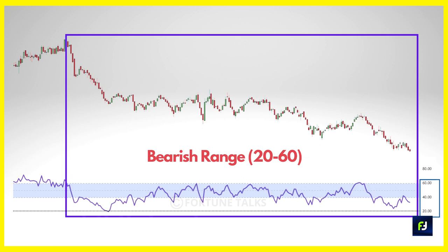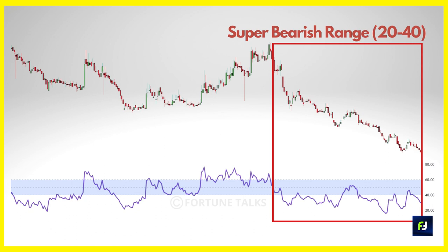A chart indicating a bearish range is highlighted with a violet box, where RSI oscillates between 60-65 and 20 — 60-65 acts as overbought and 20 as oversold. Finally, the super bearish range is highlighted in red where RSI oscillates between 40 and 20, indicating that a strong down move is very likely.